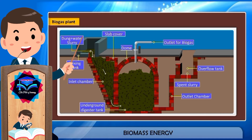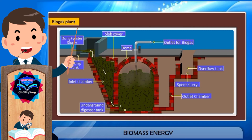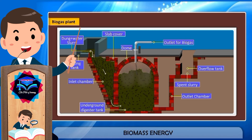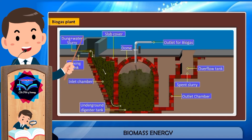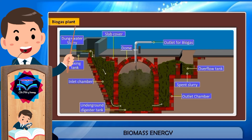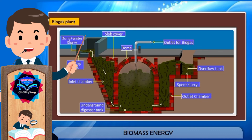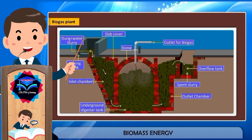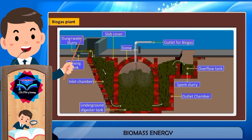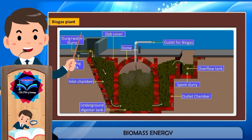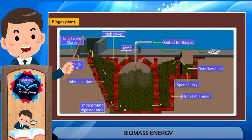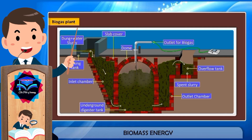During this period, the cow dung undergoes degradation by anaerobic bacteria in the presence of water, with gradual evolution of biogas. The biogas starts collecting in the dome, and as more biogas collects, it exerts pressure on the slurry in the digester tank, forcing the spent slurry into the overflow tank through the outlet chamber. The spent slurry is rich in nitrogen and phosphorus compounds and hence forms good manure. The biogas collected in the dome is taken out through the outlet and supplied to village homes through a network of pipes to be used as cooking gas.